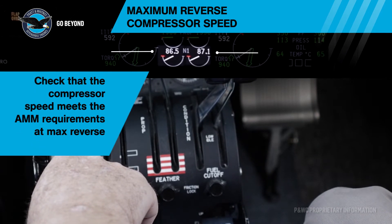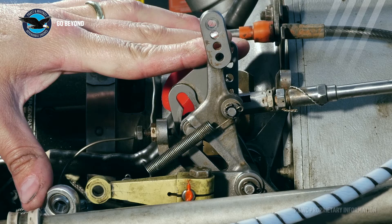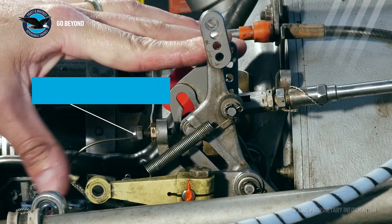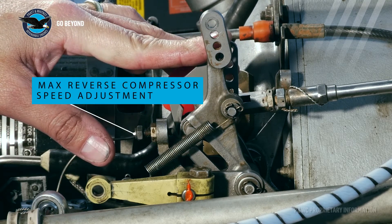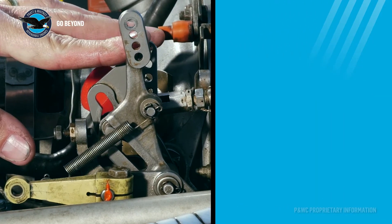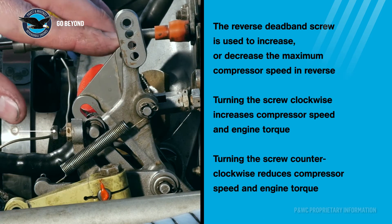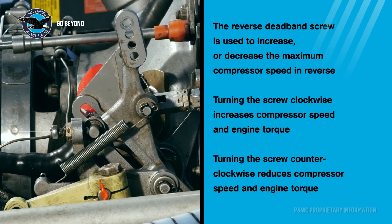We would also recommend that the torques are closely matched. Take your time to match both engines together. Maximum reverse compressor speed may be adjusted by turning the reverse pickup screw clockwise to increase compressor speed, or counterclockwise to decrease compressor speed.